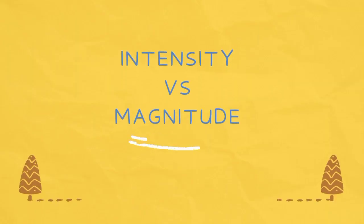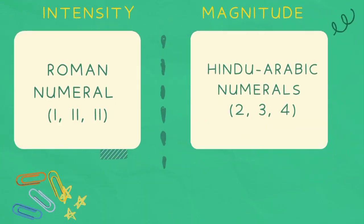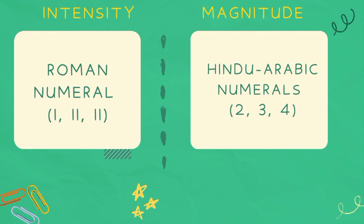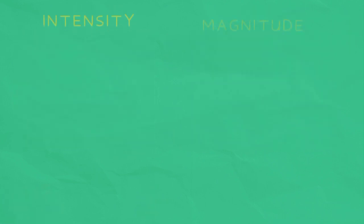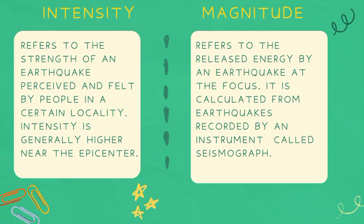Intensity vs. Magnitude: Intensity is written in Roman numerals, while magnitude is written in Hindu-Arabic numerals. Intensity uses an intensity scale while magnitude uses the Richter scale. Intensity refers to how strong an earthquake is perceived and felt by people, and is generally higher at the epicenter. Magnitude refers to how much energy is released by an earthquake at the focus.